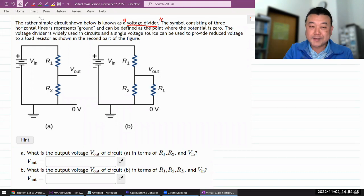As the question says, this rather simple circuit is known as a voltage divider. The symbol consisting of three, so that's the reference for ground. Okay, so let's work out question A, and I'll briefly say why it's called voltage divider.